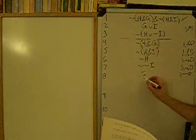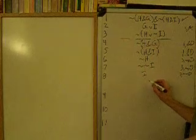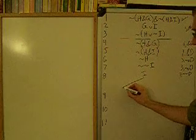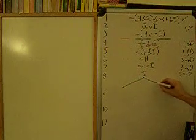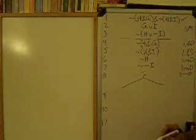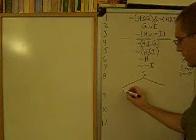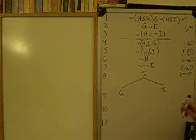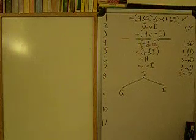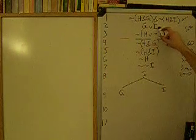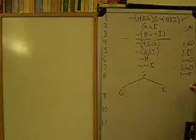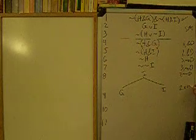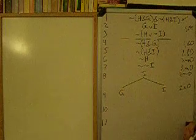Okay, now at this point we're going to split into two trees — one over here, and one over here. G is going to be over here and I over here, and we're going to take that from line two — disjunction decomposition.